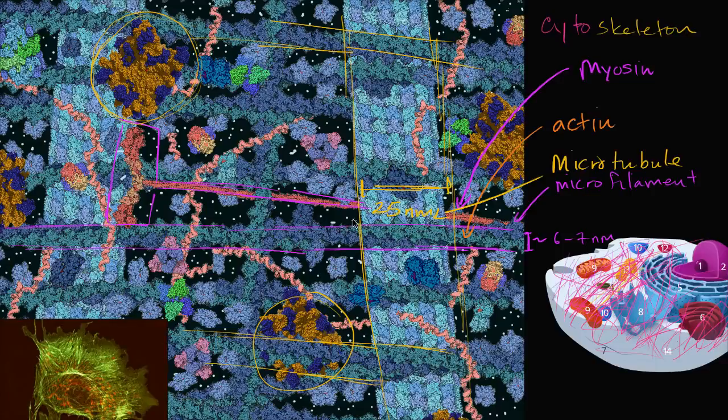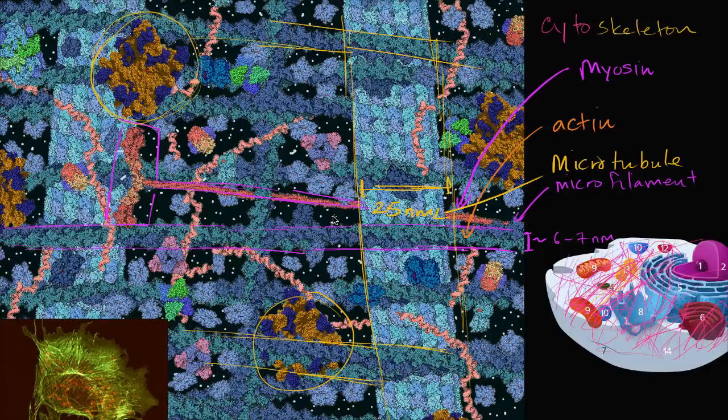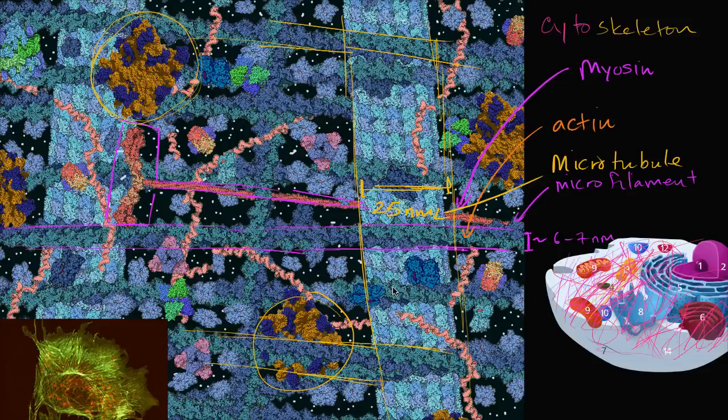And once again, these play a huge role in the structure of cells. They allow things to be organized and things to be transported. And these are also dynamic pieces of the cell. They can be constructed and they can be destroyed. And they can change the shape of the actual cells.